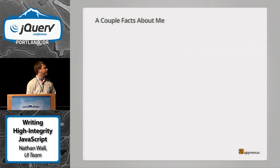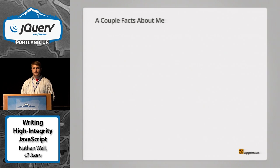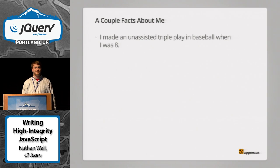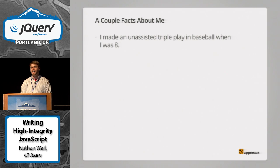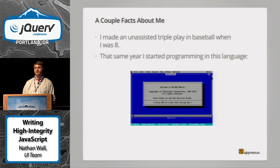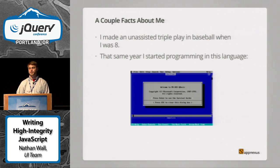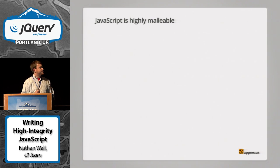Before I get started, I'm going to tell you a little bit about me. I work at AppNexus on the UI team — been there for about a year now. Also, when I was eight, I made an unassisted triple play in baseball. That was the highlight of my sporting career, and probably the reason for that is because that same year I started programming in QBasic. After that, my sports career kind of ended, and I spent most of my time doing this.